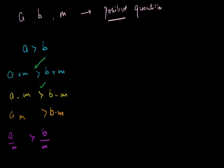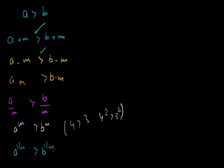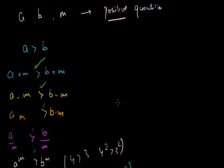If I divide by m, the sign will not change. If I raise to the power m — so a raised to power m is greater than b raised to power m — again the sign will not change. For example, if 4 is greater than 3, then 4 squared is also greater than 3 squared. Similarly, the m-th root of a is greater than the m-th root of b — if 4 is greater than 3, then square root of 4 is greater than square root of 3. In all these situations the sign of inequality is not changed.